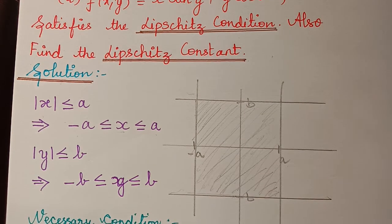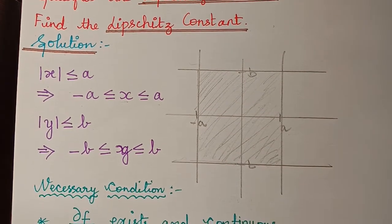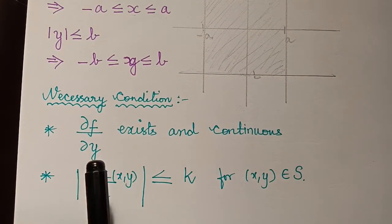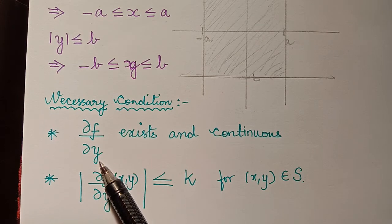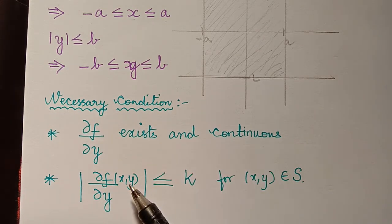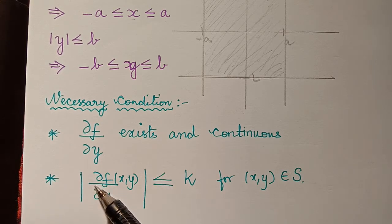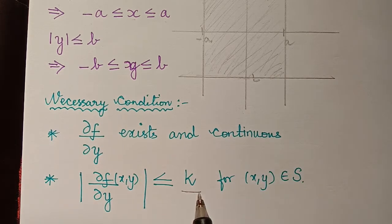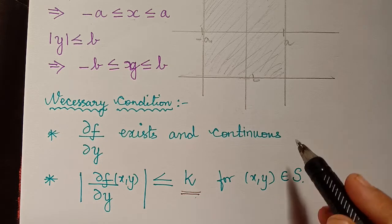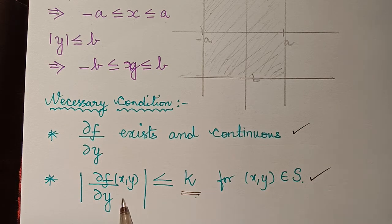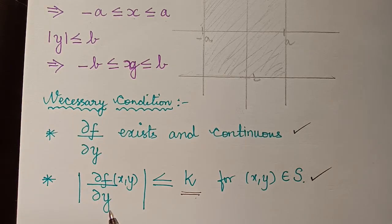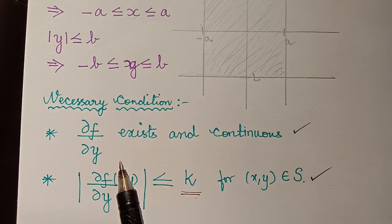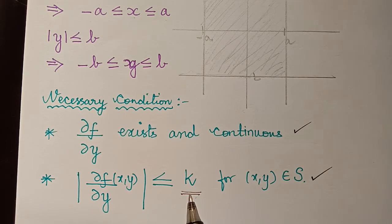The necessary condition for a function to satisfy the Lipschitz condition is that the partial derivative of that function with respect to y must exist and be continuous. Secondly, the modulus of ∂f/∂y must be less than or equal to a constant k, and this constant k is known as the Lipschitz constant. If these two conditions are satisfied, then the given function satisfies the Lipschitz condition.